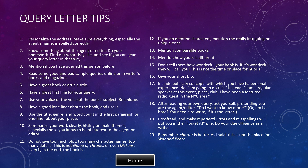Do not give too much to the plot, or too many character names, or too many details. This isn't Game of Thrones or even Dickens, even if, in the end, the book is. If you do mention characters, mention the really intriguing or unique ones. Mention comparable books. Mention how yours is different. Don't tell them how wonderful your book is — if it's wonderful, they will call you. This is not the time or place for hubris.